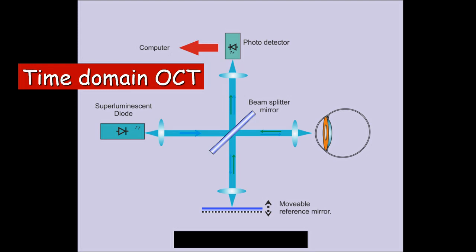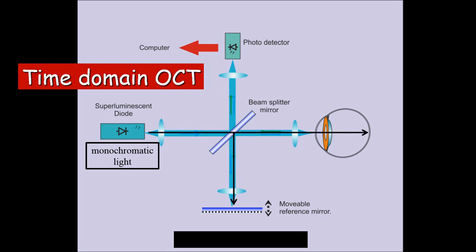In time domain OCT, a monochromatic diode light reaches a beam splitter. Half of the light goes into the eye and the second half goes into a mirror. Light comes back from both paths, they interfere together, and the combined signal reaches a detector.